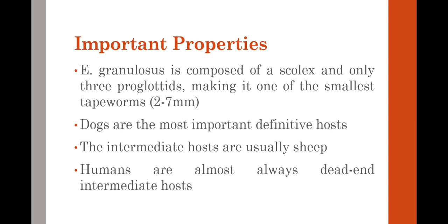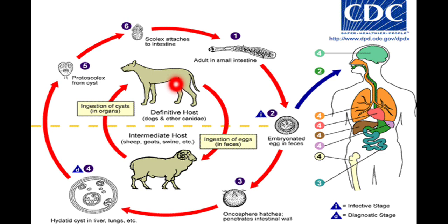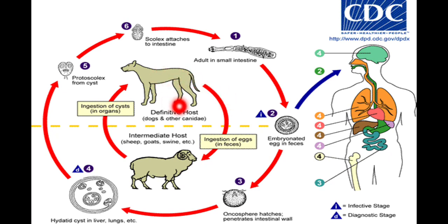Starting with the life cycle of Echinococcus granulosis: the dog is infected with Echinococcus granulosis, which is present in the intestines of the dog or other canine family members. The dog sheds eggs in its feces, and if sheep ingest these eggs in their food or water, the infection begins.